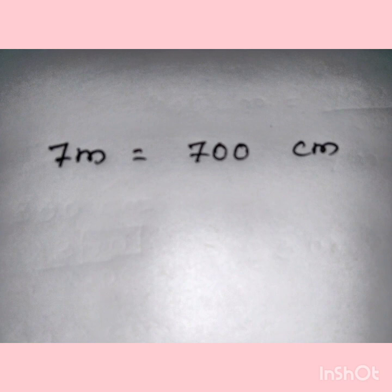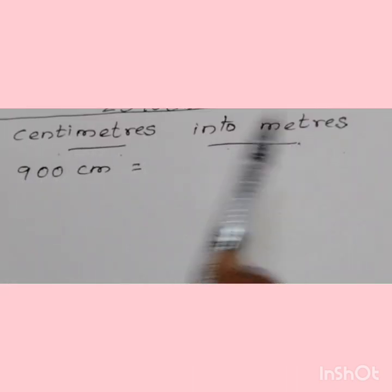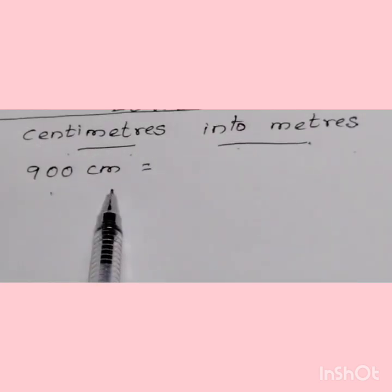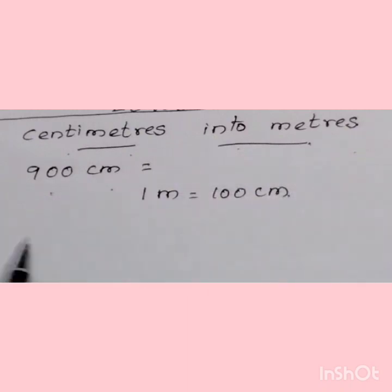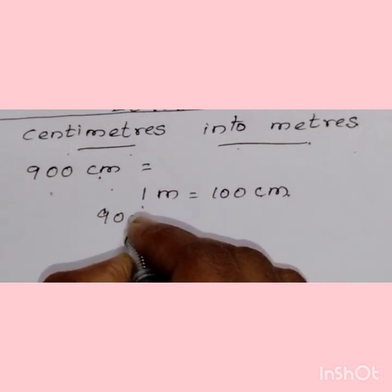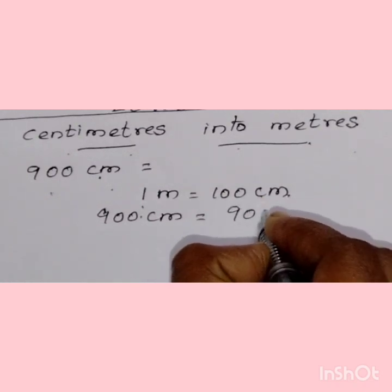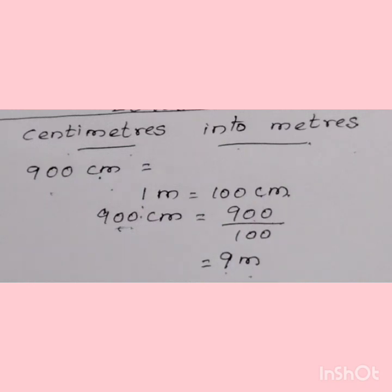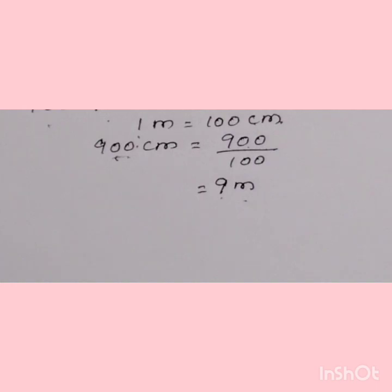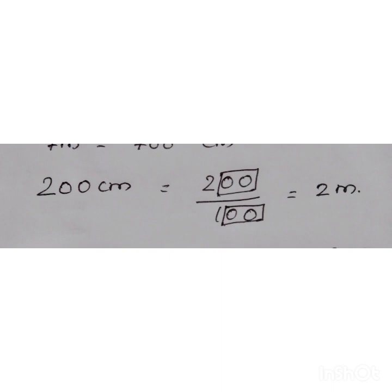Our previous topic was to convert meters into centimeters. Now we are going to convert centimeters into meters. We know one meter is 100 centimeters, but the question is already in centimeters, so we divide by 100 to find the meters. Always remember: if a bigger unit is given and you are converting to a smaller unit — like meter to centimeter — multiply. If a smaller unit is given and you are converting to a bigger unit, you divide.